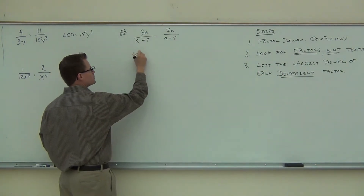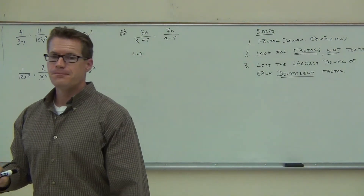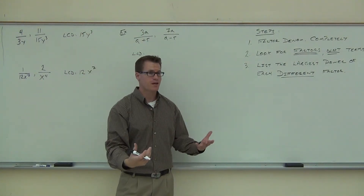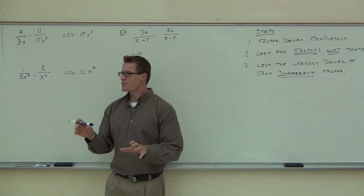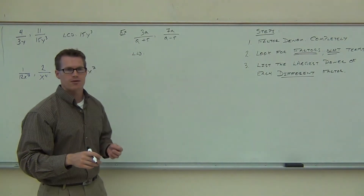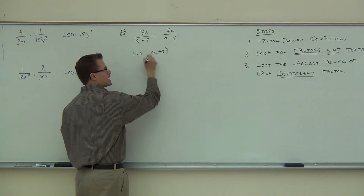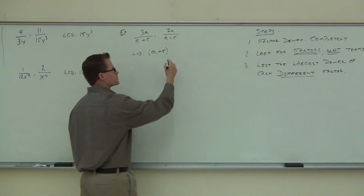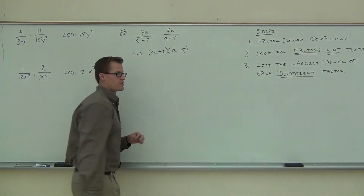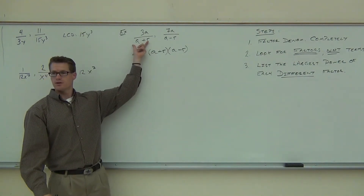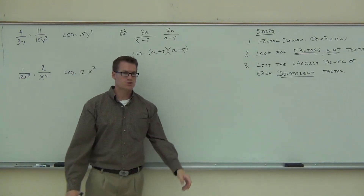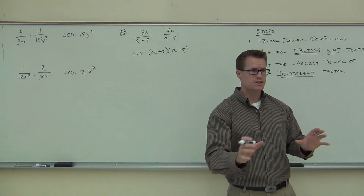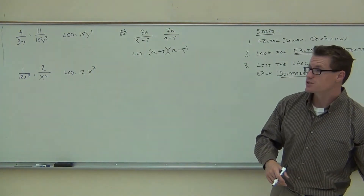Do I have any factors that are the same? A plus 5 and A minus 5 — no, they're not the same factors. I have terms that are the same, but that doesn't count. So I list the different factors: A plus 5 to the first power and A minus 5 to the first power. Does the LCD have the A plus 5? Does it have the A minus 5? That's your LCD. The hard part is factoring — once you have your factors, take the distinct ones at the largest power and you're done.